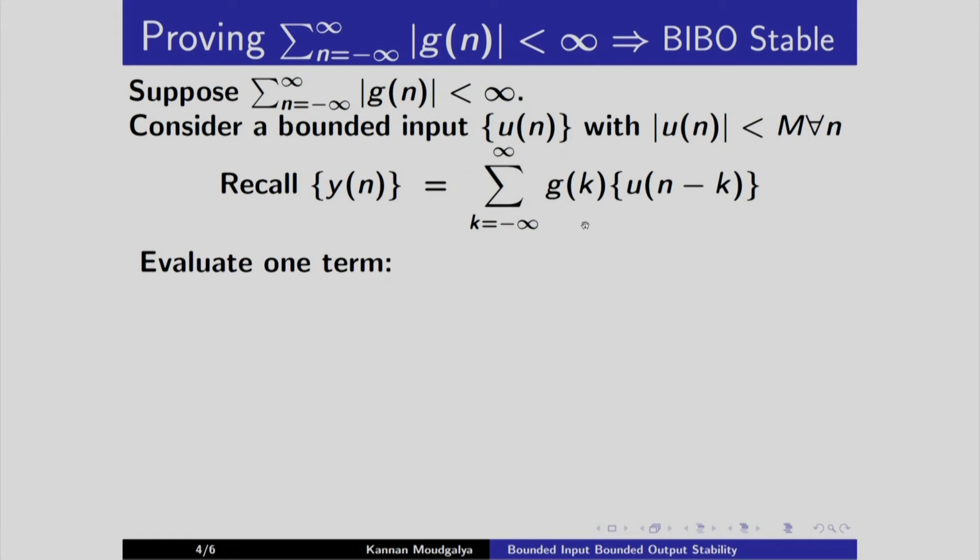Let us evaluate just one term. I have written y(n) here. Instead of considering the entire doubly infinite sequence, I am considering only one term. So, the absolute value of y(n) is less than this value where I have taken absolute value of each term.